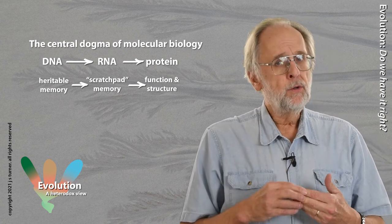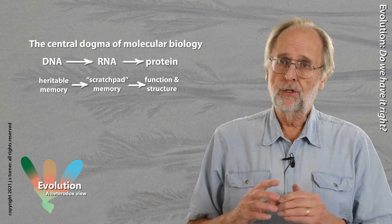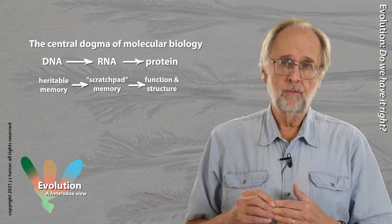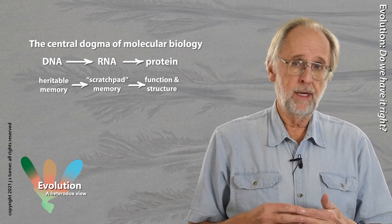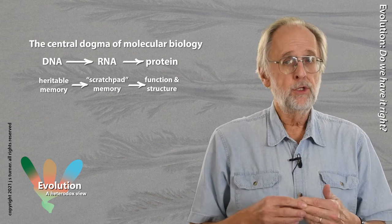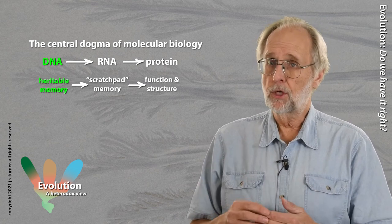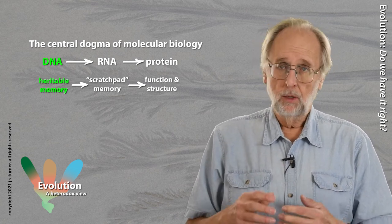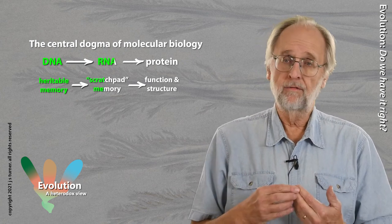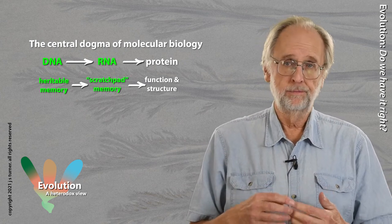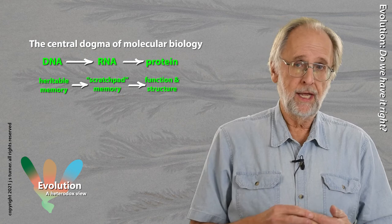The central dogma is obviously very strongly gene deterministic. The only way a new function could be brought about would be through changes, ultimately, in the DNA sequence code, which would ramify through to scratch pad memory and function. This was Morgan's mutationism.